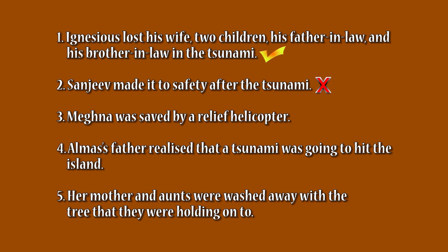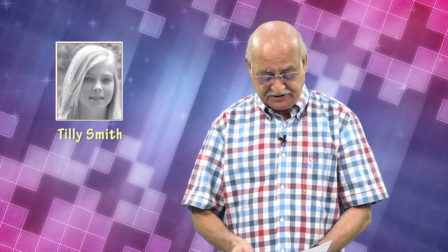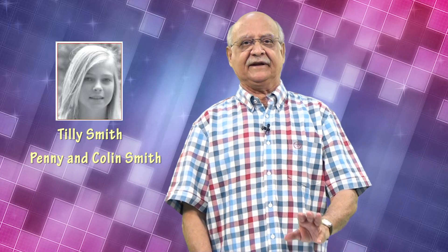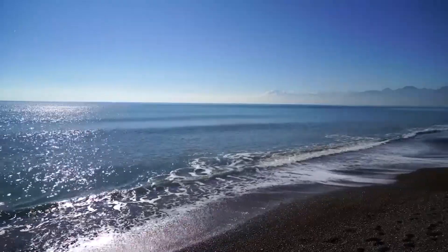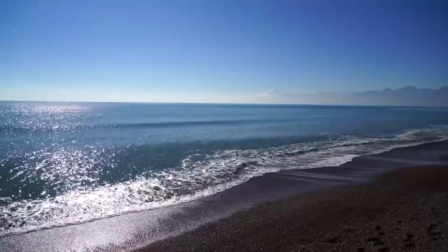Let's move on to part two. We are going to read about a girl from Britain who has come to Thailand for a holiday at the beach. Her name is Tilly Smith. Tilly Smith is a high school girl and they are all in a place called Phuket, enjoying a holiday on the beach with her parents. Her parents were Penny and Colin Smith. They were on a holiday, enjoying on the beach, and Tilly is very happy.